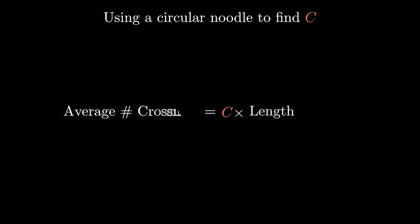This means that for this particular noodle, the average number of crossings is definitely 4. On the other hand, the length of the noodle is the circumference of the circle, which is just pi. Rearranging the equation gives us what we're looking for. c is 4 over pi.